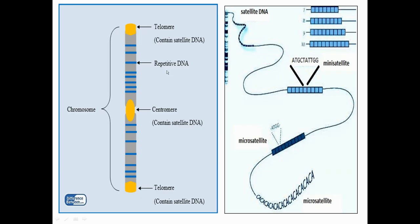Where are repetitive sequences and satellite DNA located? Repetitive DNA is present in the arms of the chromosome, whereas satellite DNA is present at the centromere and at the tips of the chromosome.